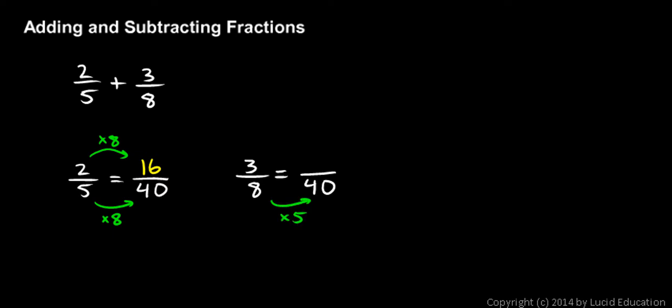8 times 5. So since I've multiplied the denominator by 5, I also multiply the numerator by 5. And put the result over here. So 3 times 5 is 15. So 3 eighths is equal to 15 over 40.